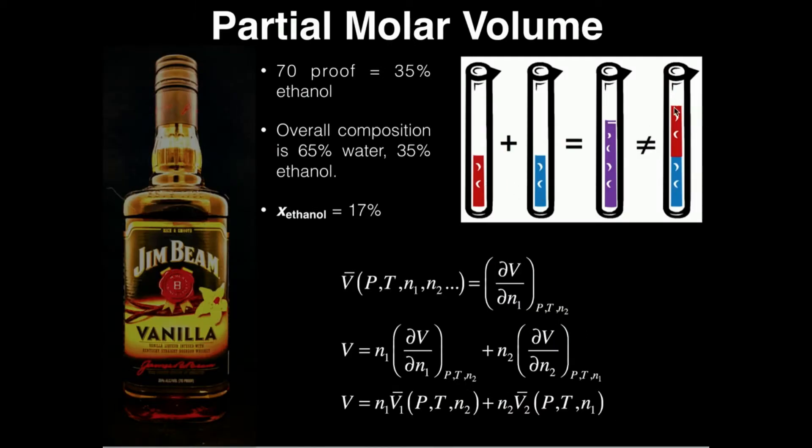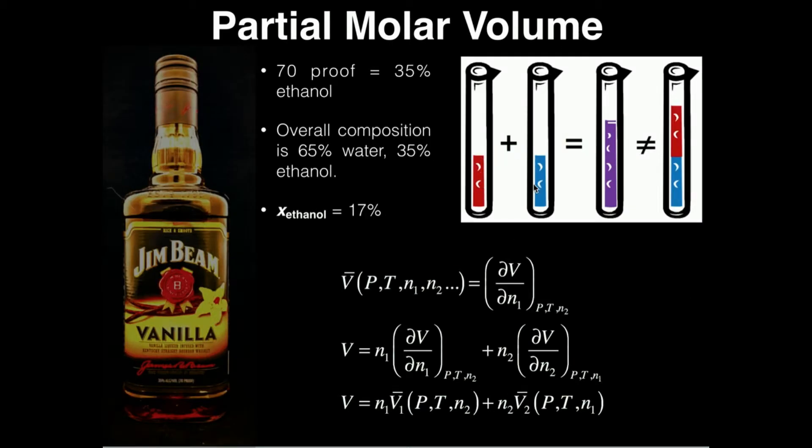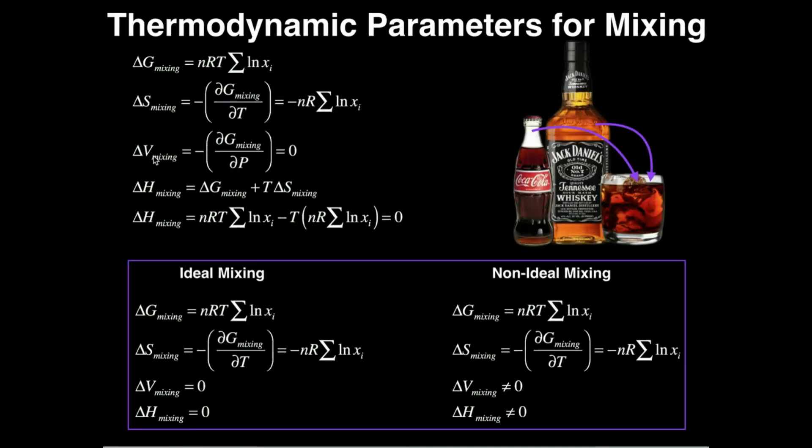We can also calculate a delta V of mixing, and V stands for volume here. This is hinting at the next video that we're going to cover, but sometimes you can add two different components together—suppose for example this was five milliliters, this blue one is five milliliters—so we would expect adding them together we get 10 milliliters, right? But in practice that doesn't always happen. We may get in actuality what's here in purple, which is actually a little bit less than 10 milliliters. In general, the delta V of mixing is the difference between the volume that you expect versus what you actually get, and this can be calculated by taking the derivative of the Gibbs free energy of mixing with respect to pressure.